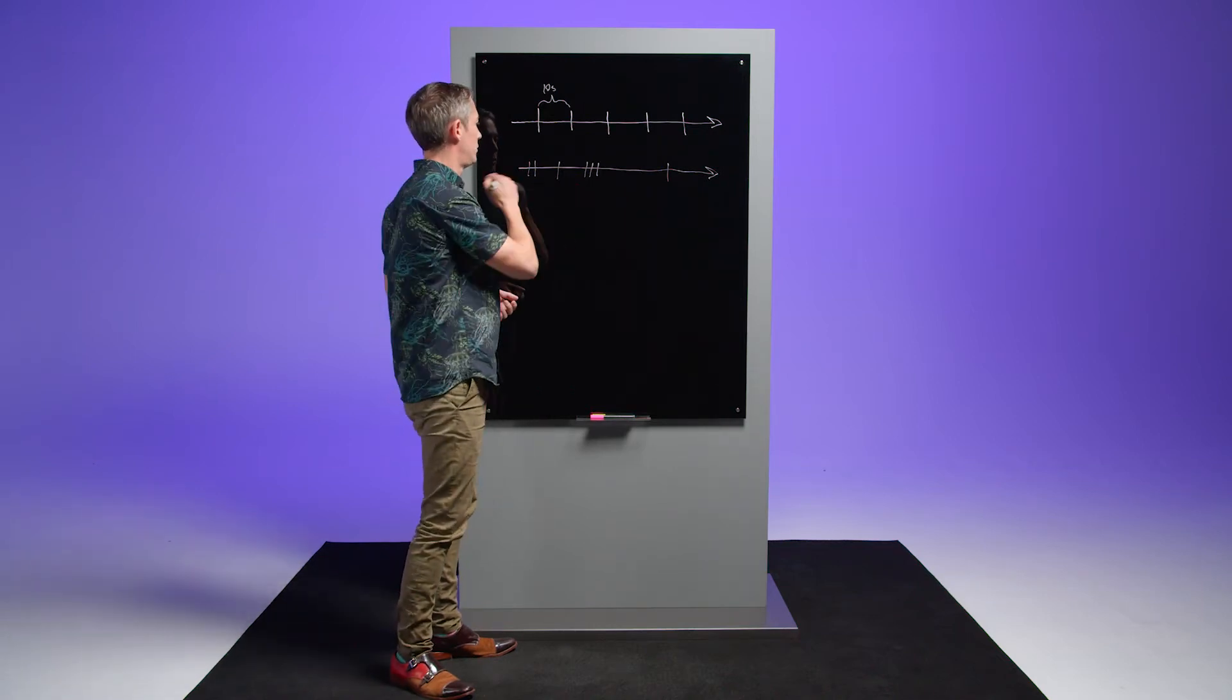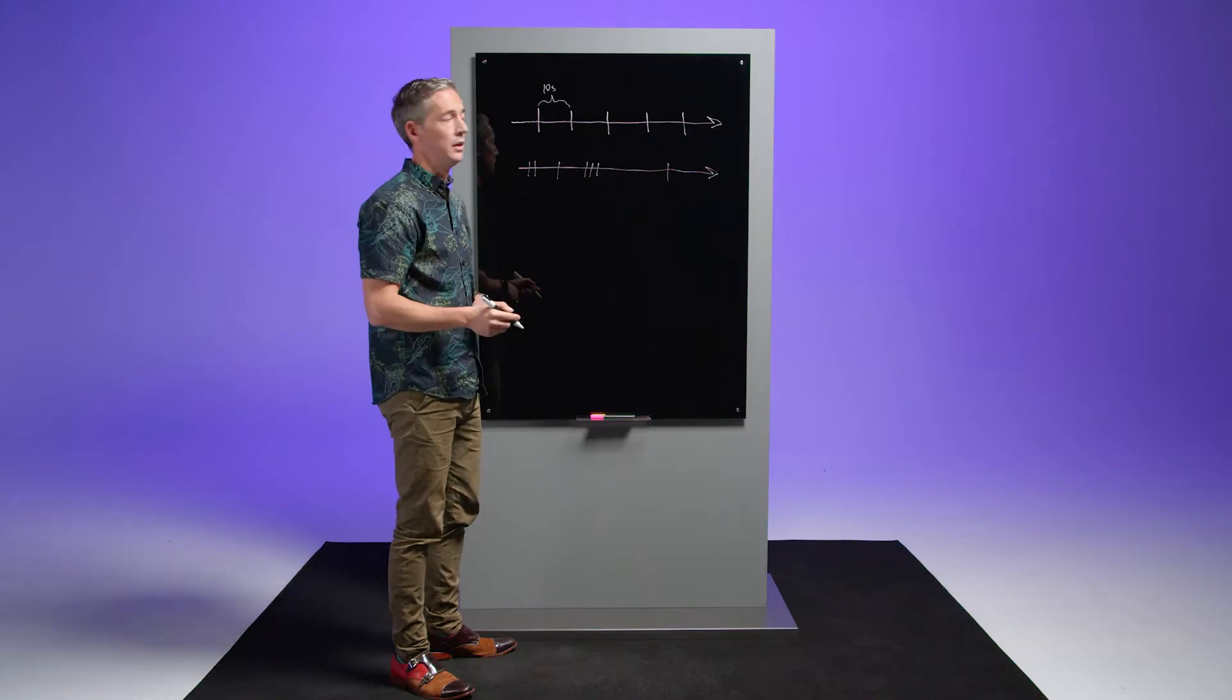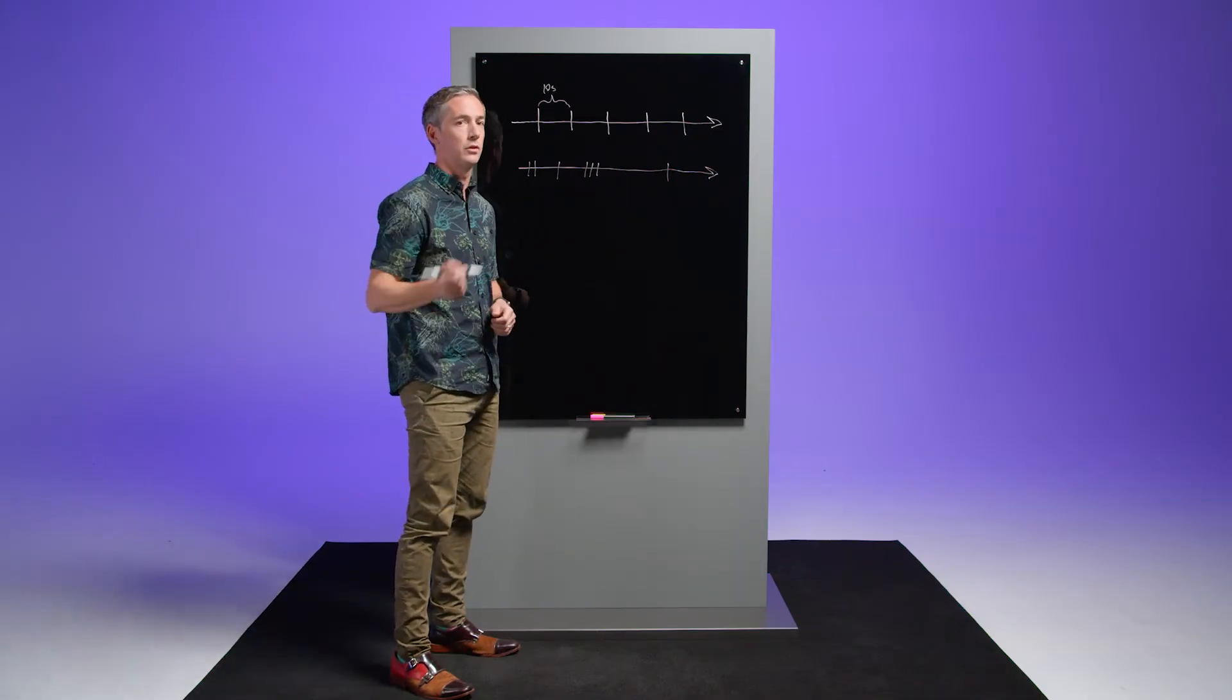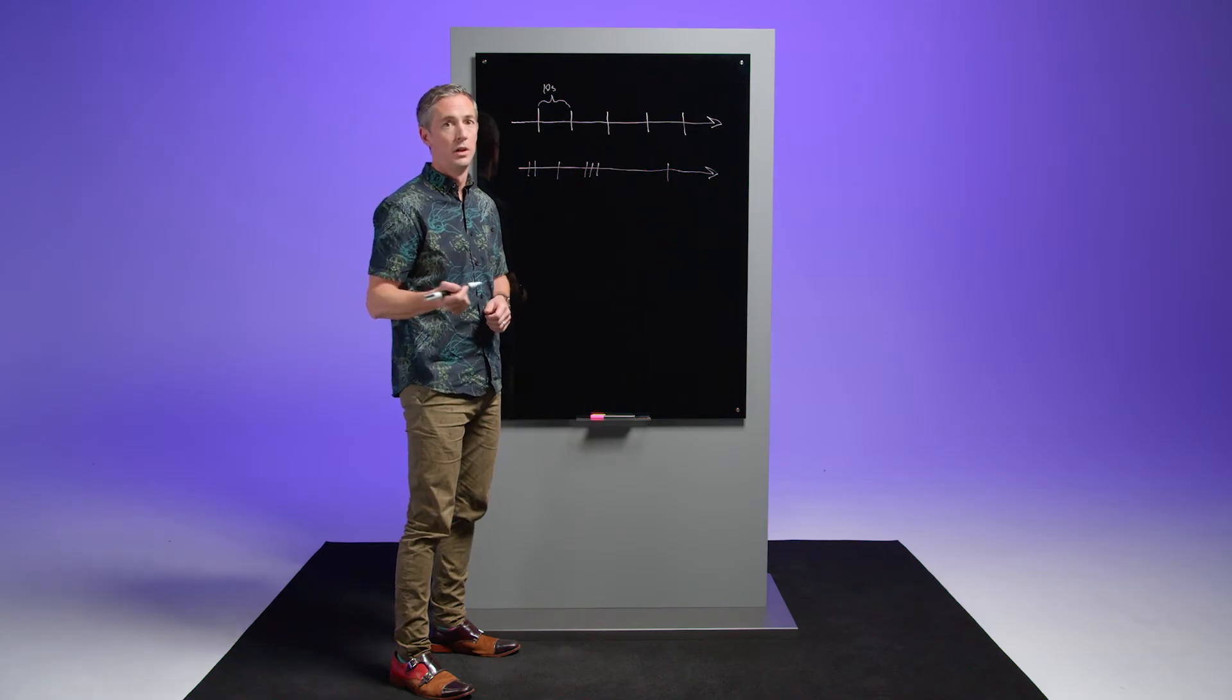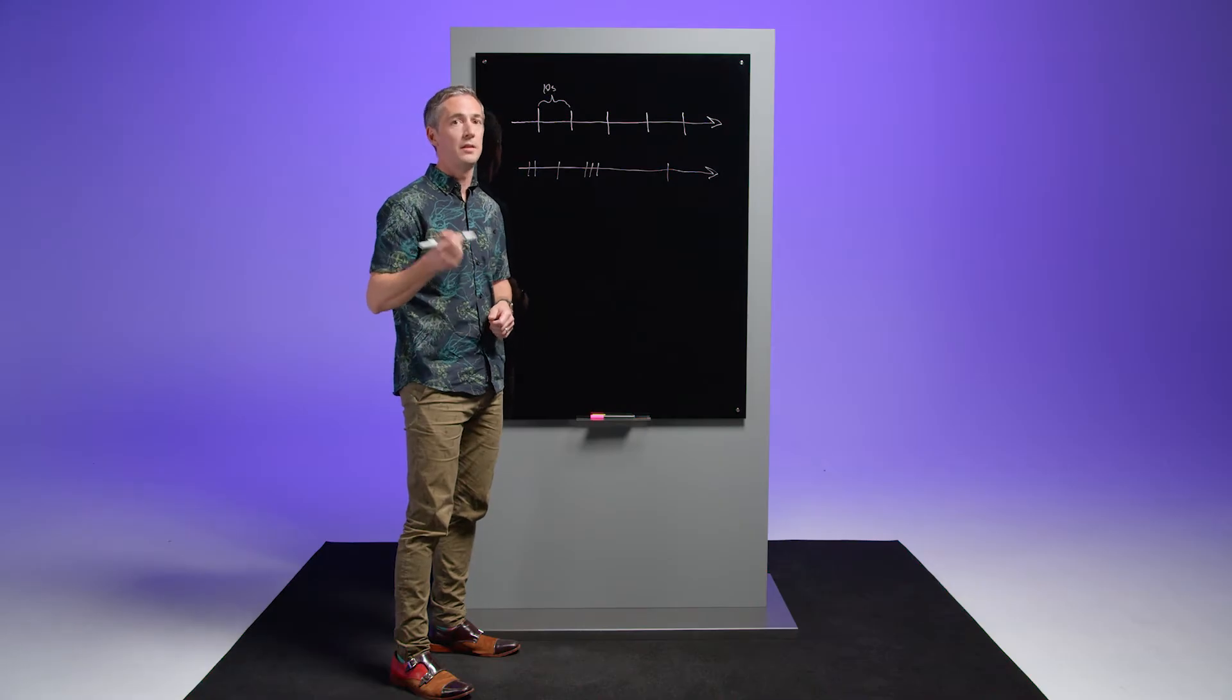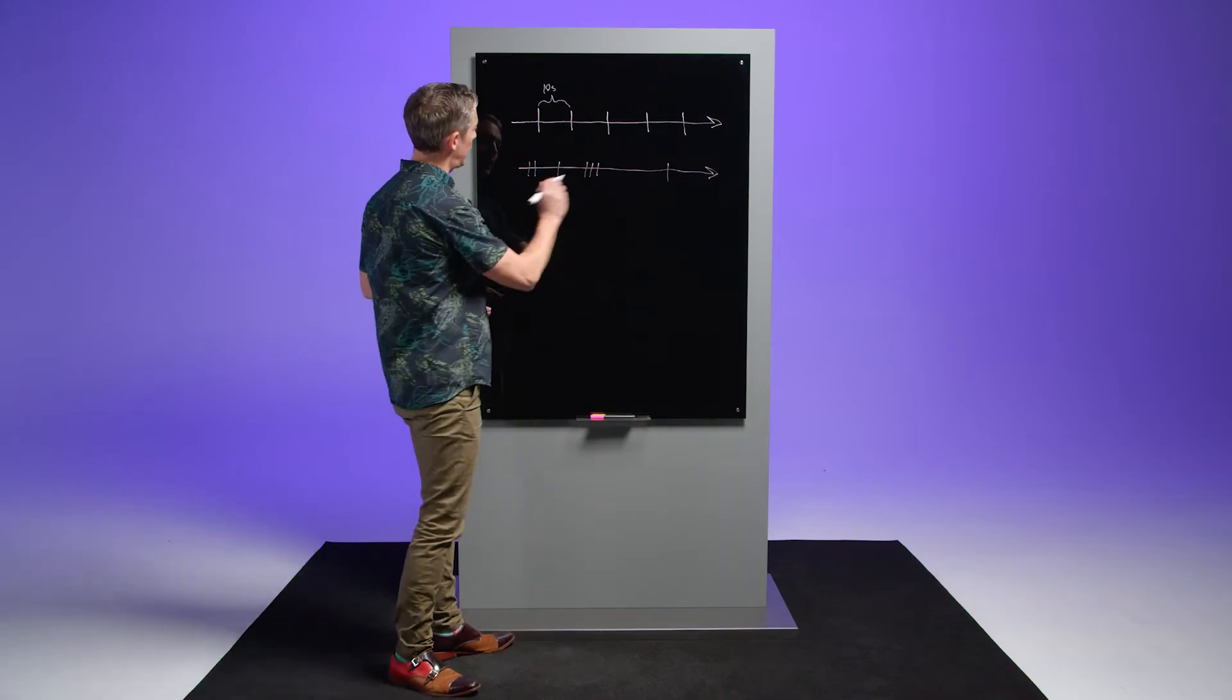Now, the interesting thing about an irregular timeline and a regular timeline is that you can induce a regular timeline from an irregular one. For example, we could count how many events happened in each 10-second window.